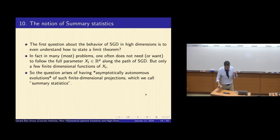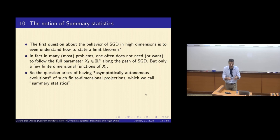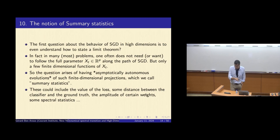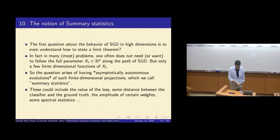The question arises of having asymptotically autonomous evolutions. If you have a dynamical system — SGD, or even just a gradient flow — and you take a projection of it, normally it's not autonomous. But here, we will call 'summary statistics' things that define autonomous projections. Of course, we also need them to describe important things. They could include the value of the loss, some distance between the state of your SGD and the ground truth, the amplitude of certain weights, or some spectral statistics.